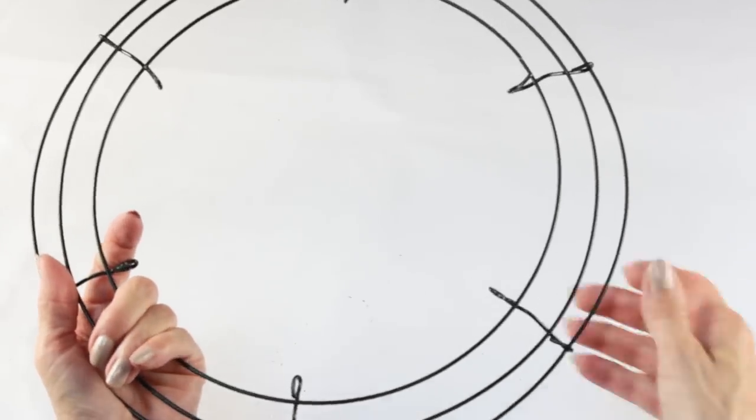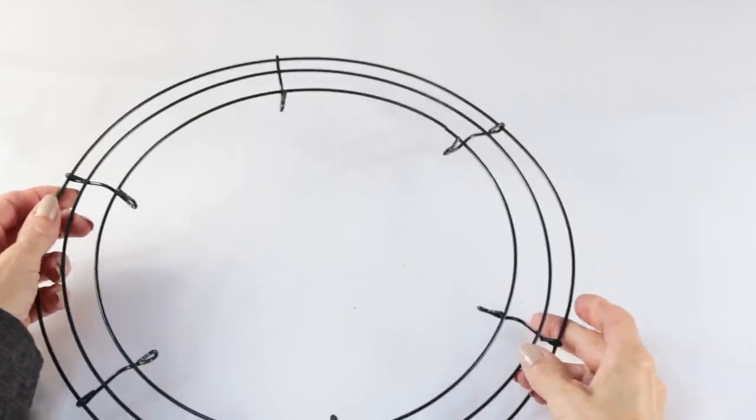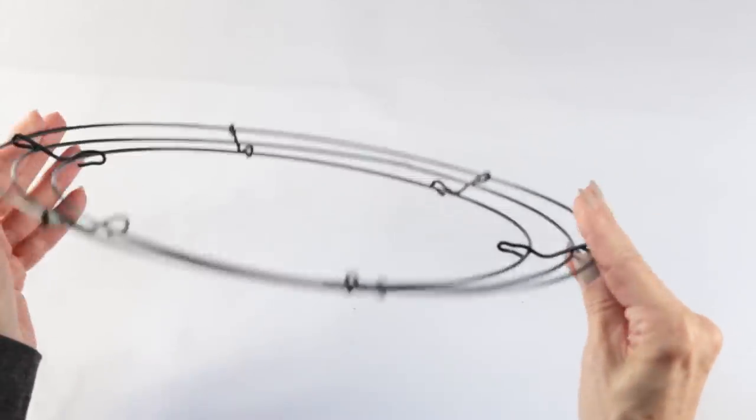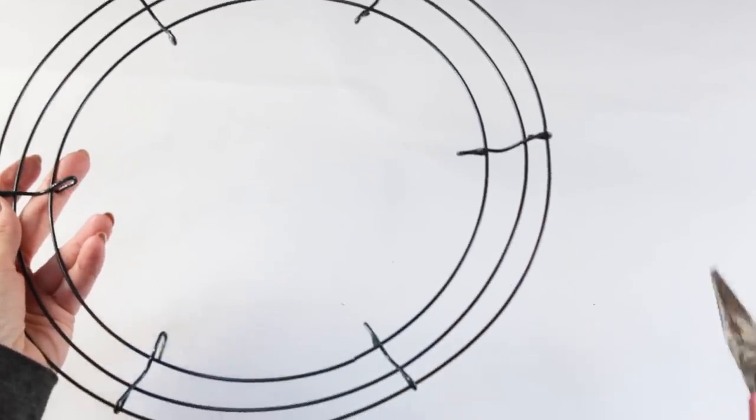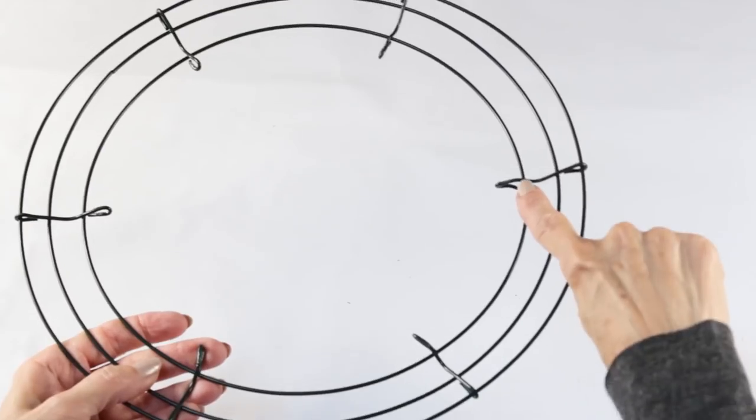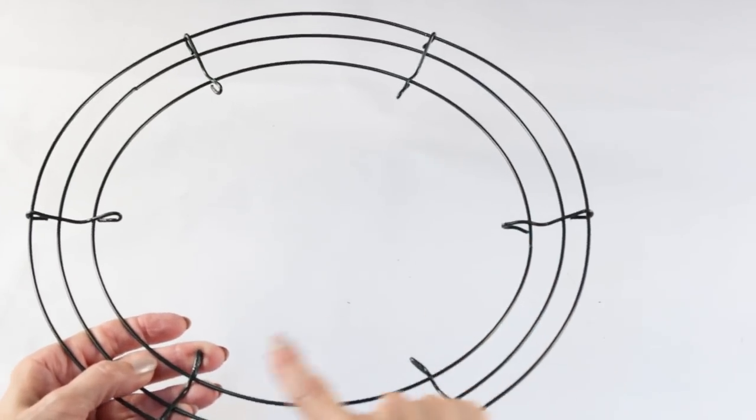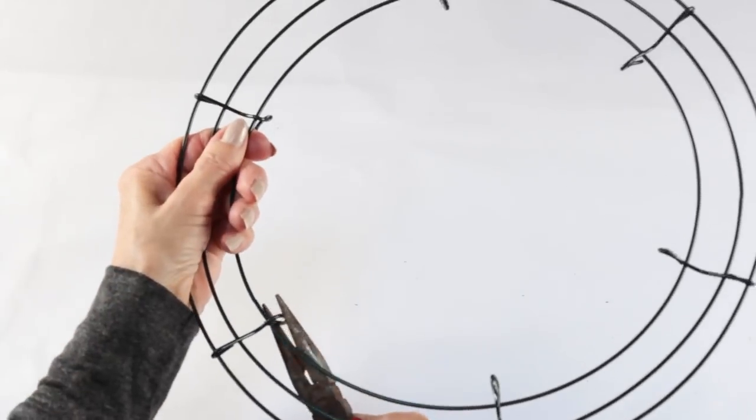And now you're going to turn the wreath over because the bottom is going to be our top. And now you're going to grab those six little tabs that we flattened and you're going to bend them downwards.